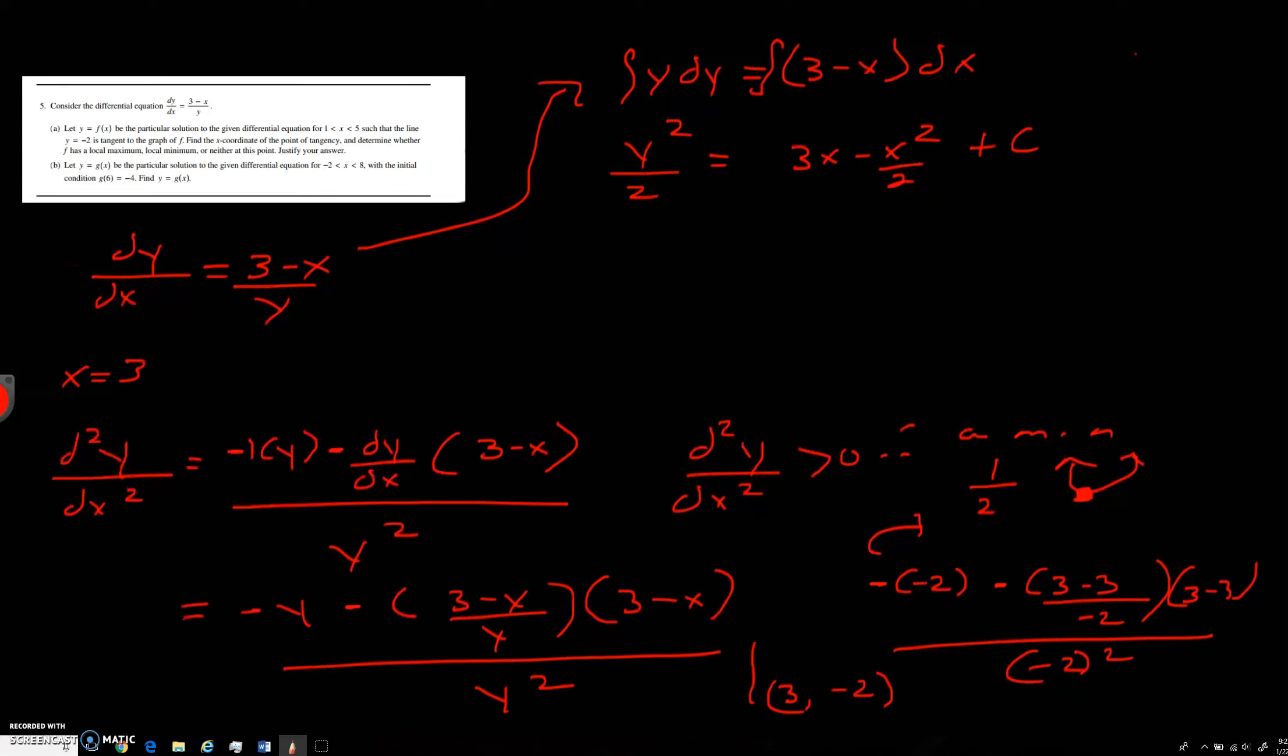So 6 comma negative 4, we're going to plug that in. So what are we going to get? 16 over 2 equals 18 minus 36 over 2 plus c. So we're going to get 8 equals 18 minus 18 plus c. So c equals 8.